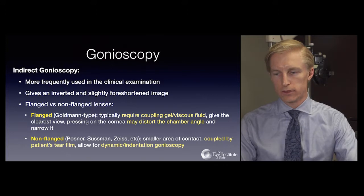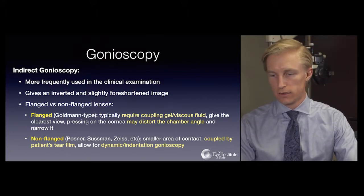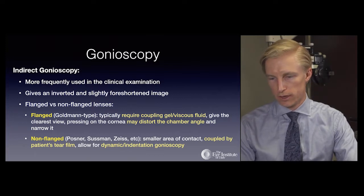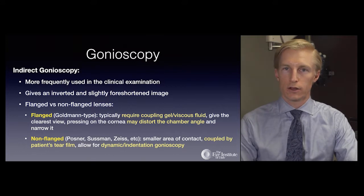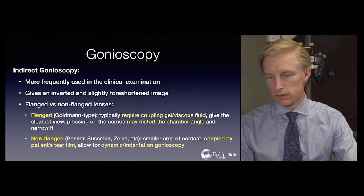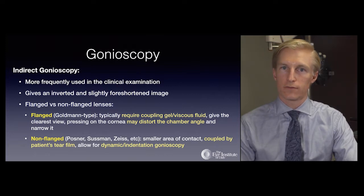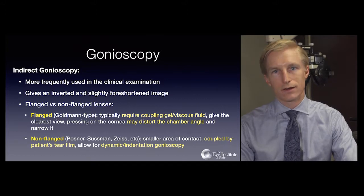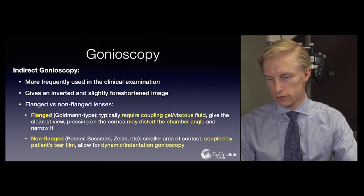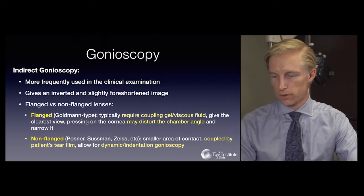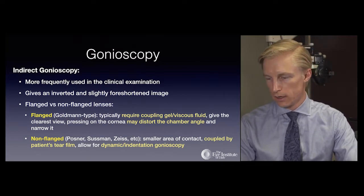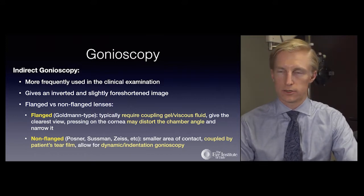Indirect gonioscopy is more frequently used in clinical examination and gives an inverted and slightly foreshortened image of the trabecular meshwork and angle structures. There are two main groups of lenses: flanged and non-flanged. The flanged or Goldmann-type lens requires a coupling gel and gives the clearest view, but pressure on the cornea can artificially narrow the angle. Non-flanged lenses such as Posner, Sussman, and Zeiss allow for dynamic or indentation gonioscopy and are coupled only by the patient's tear film.